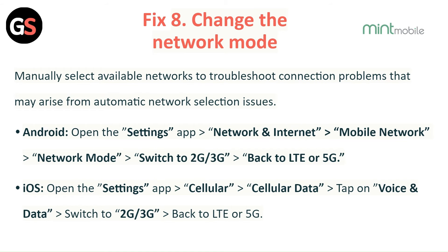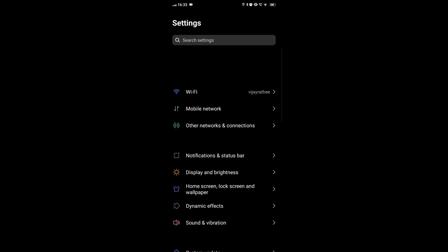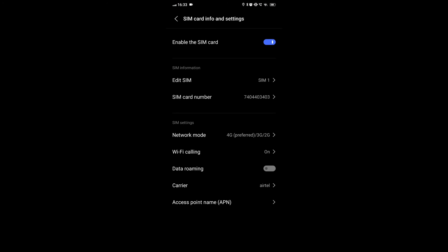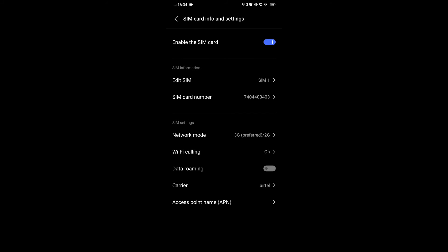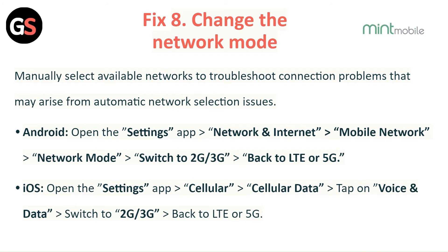Fix 8: Check the network mode. Manually select available networks to troubleshoot connection problems that may arise from automatic network selection issues. For Android: open Settings, then Network and Internet, then Mobile Network, then Network Mode — switch to 2G/3G, then back to LTE or 5G. For iOS: open Settings, then Cellular, then Cellular Data, tap Voice and Data, switch to 2G, then back to LTE or 5G.